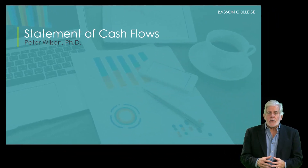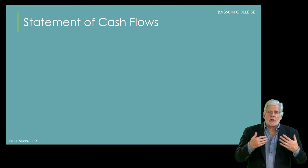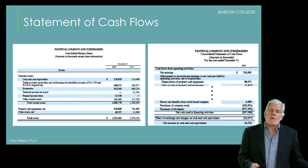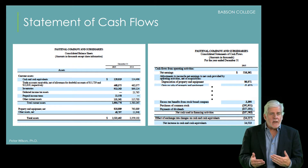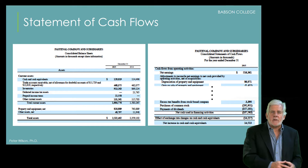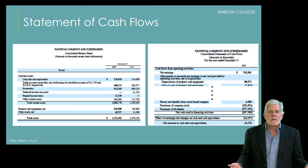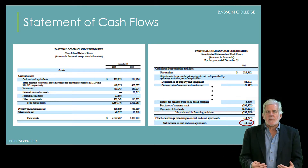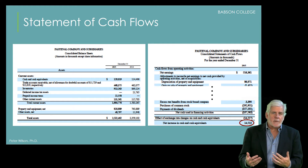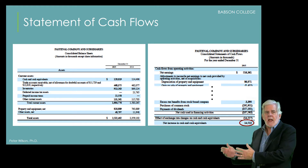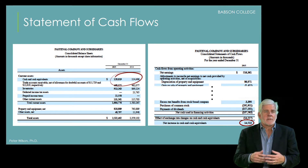The purpose of the statement of cash flows is to show where the firm got cash during the year and how it was spent. In so doing, it provides an explanation of the change in the cash balance on the balance sheet from one year to the next. The bottom-line figure on the statement of cash flows, the net increase or decrease in cash, should equal the change in the cash account, as you see here with Fastenal.